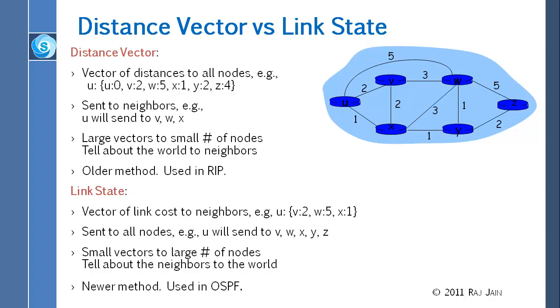When I tell about the world to the neighbors, my information is going to be very big. I have to tell about 60 different nodes to five people. It will be big vectors. That is called distance vector. On the other hand, when I tell the world about my neighbors, I just announce the five links that I have. That is called link state. Originally, we started with distance vector, and now we are moving to link state.